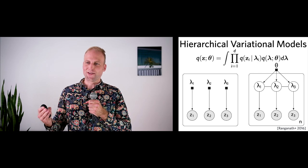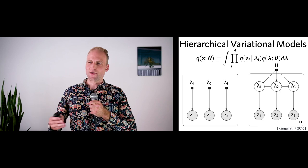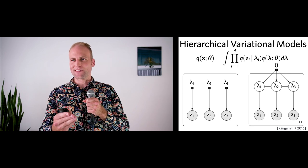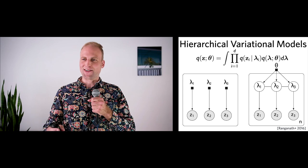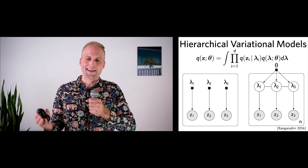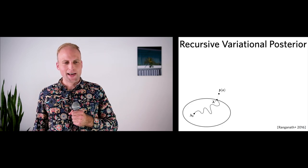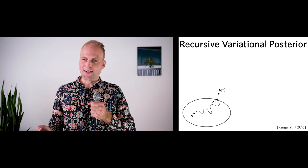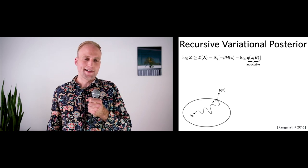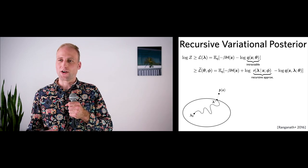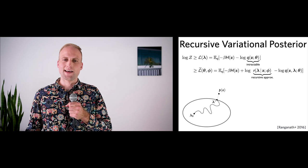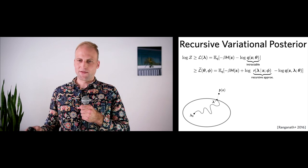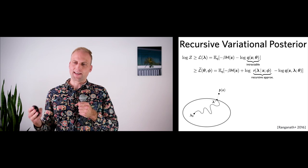However, the whole motivation was an intractable integral — we weren't able to compute the normalizing constant over all configurations. Now we again have an intractable integral over all latent variables. But if you like computing lower bounds, you can apply the variational inference trick again and compute a lower bound on this lower bound — doing variational inference twice by introducing a recursive variational posterior. The recursive approximation is written r of lambda conditional on z with parameters phi.